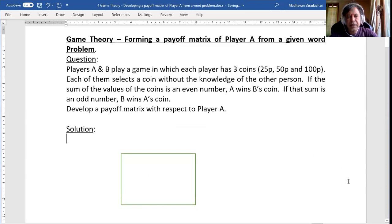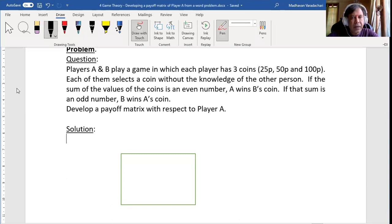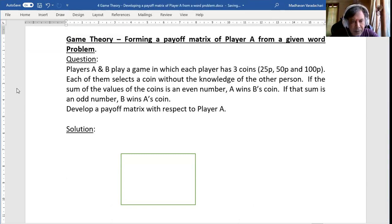So how do we formulate it? We'll consider the strategies as 25 paise, 50 paise, and 100 paise. Here again, 25 paise, 50 paise, 100 paise. This is Player A. This is Player B.